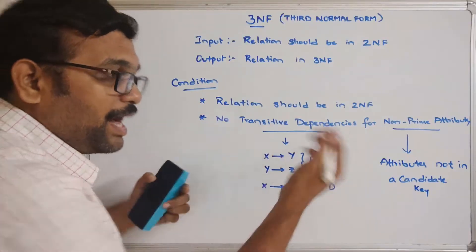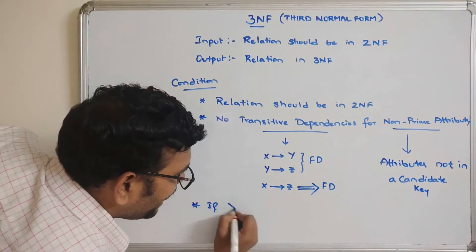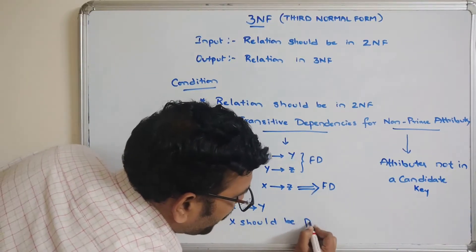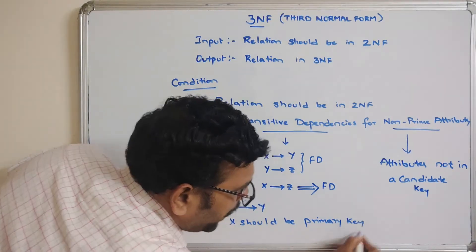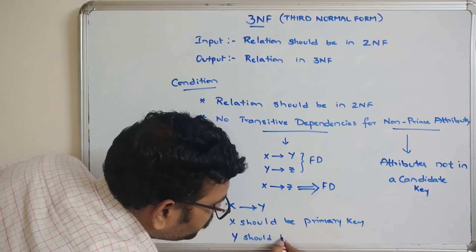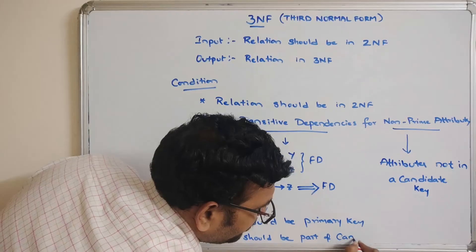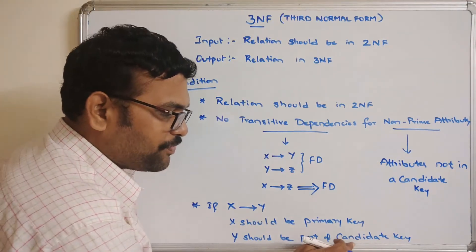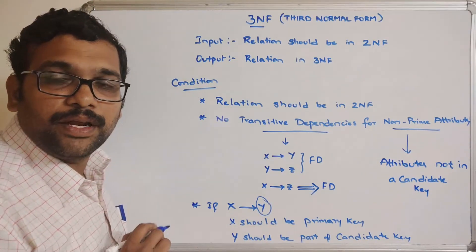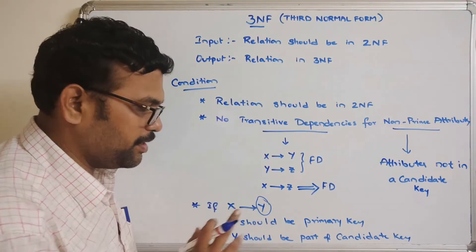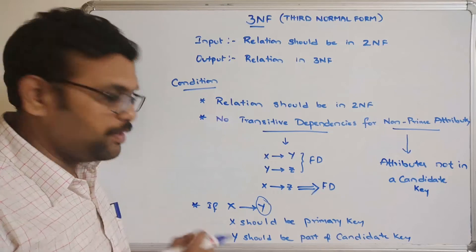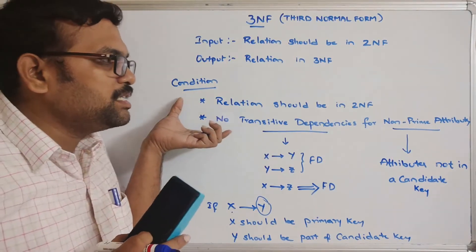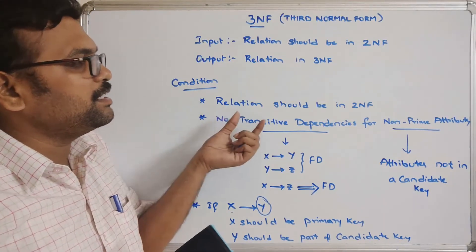Another way we can say it: if X → Y is a functional dependency, then X should be the primary key and Y should be part of the candidate key — meaning Y is a prime attribute. X is a super key or primary key, meaning by knowing X we can get all the details of all other attributes. These are the two major conditions needed to be satisfied if the relation is in 3NF.